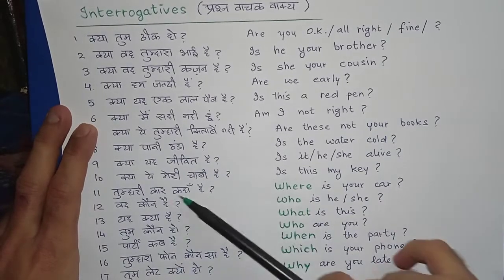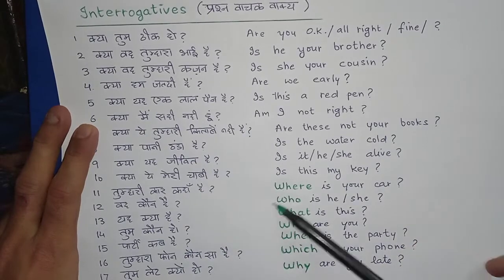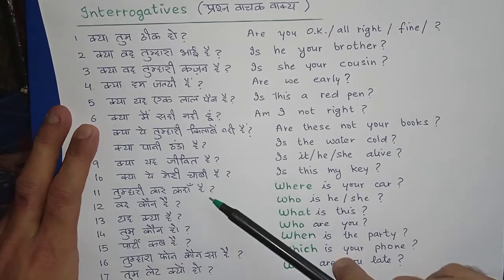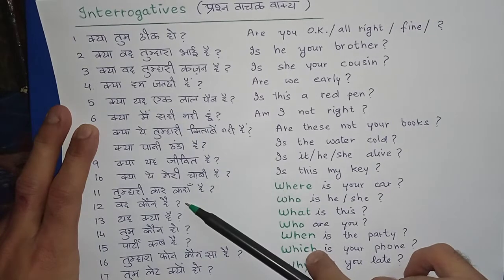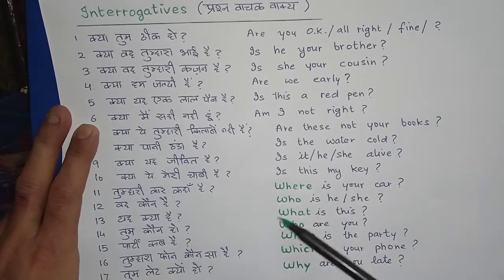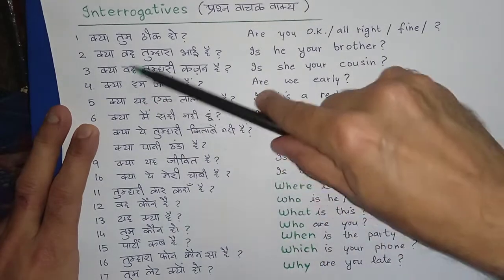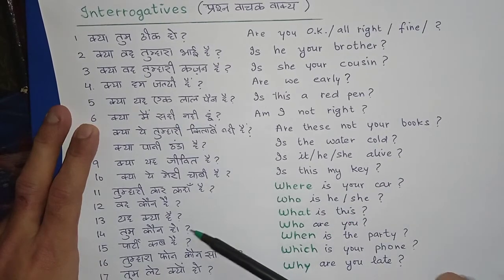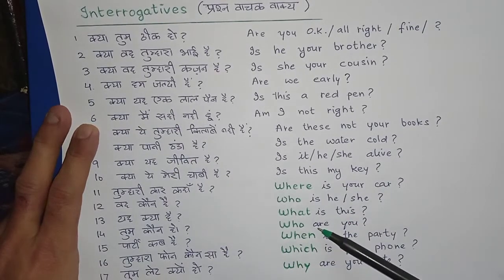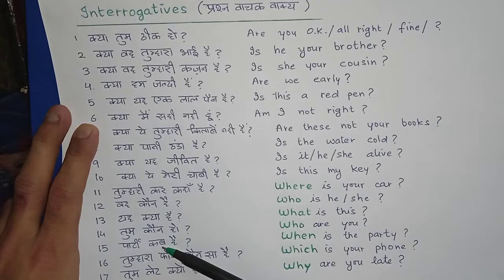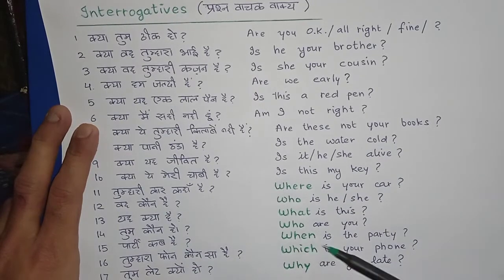Ab WH questions: Tumhari car kahan hai? — Where is your car? Woh kaun hai? — Who is he/she? Yeh kya hai? — What is this? Tum kaun ho? — Who are you? ('Who' pehle, phir is/are, phir subject.) Paati kab hai? — When is the party?